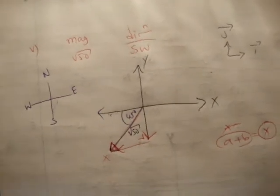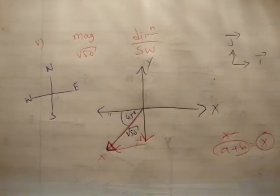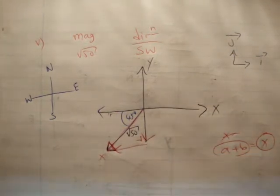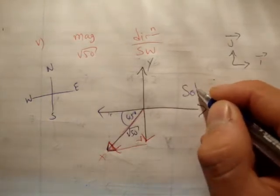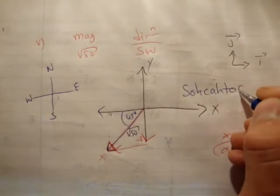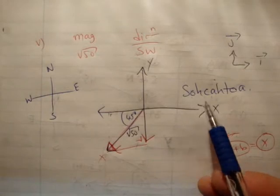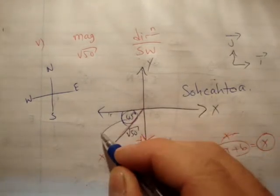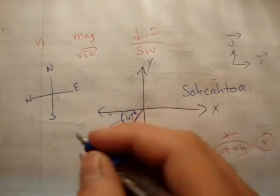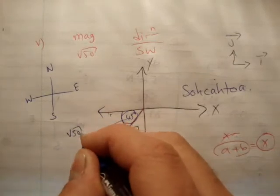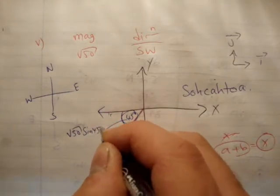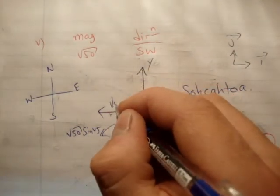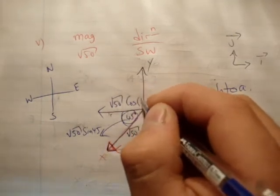We know that this is 45 degrees. We know the magnitude is root 50. We use SOHCAHTOA. We know that sine is opposite, so if you're looking at this angle, this side here is opposite. This is root 50 sine 45. This one here is root 50 cos 45.